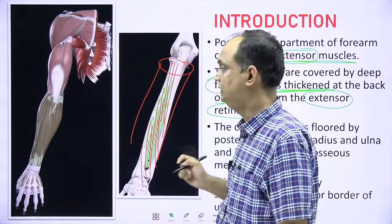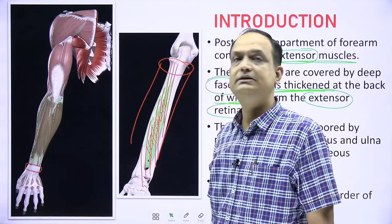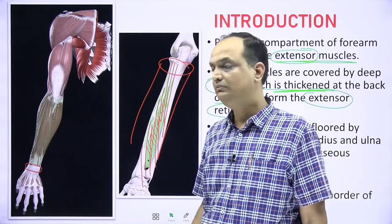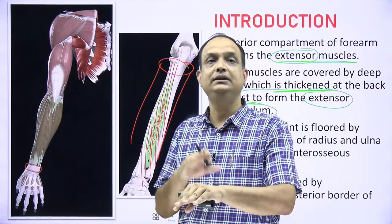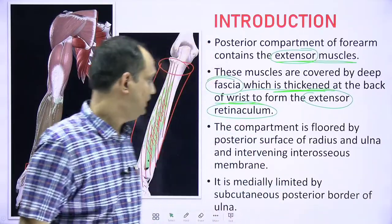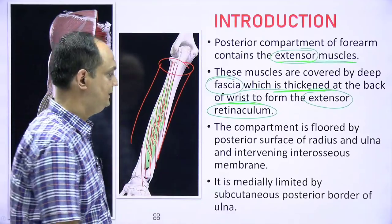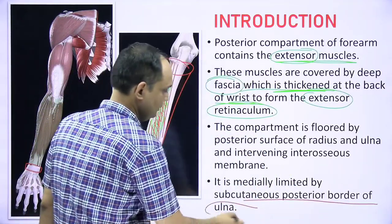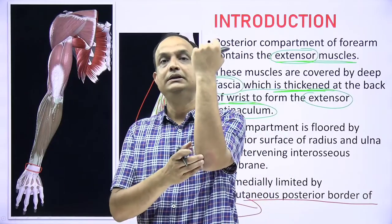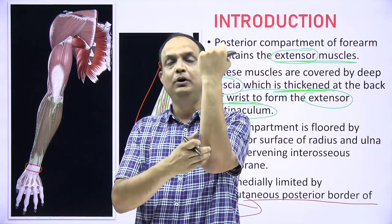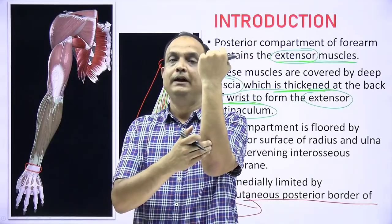Near the posterior part of the wrist joint you can see a band known as the extensor retinaculum, which keeps the tendons in their position during action. The posterior compartment is medially limited by the subcutaneous posterior border of the ulna — a border that all of you can palpate on your own forearm.